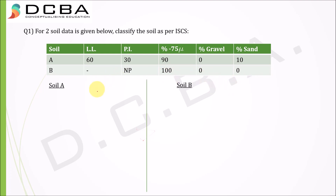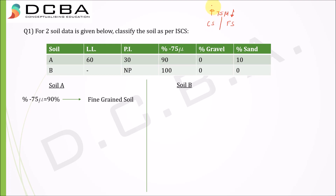For Soil A, since percentage less than 75 microns is 90%, we know that 75 microns is the distinguishing criteria between a fine-grained soil and a coarse-grained soil. If more than 50% is passing through 75 microns it is a fine-grained soil; if more than 50% is retained on 75 microns it is a coarse-grained soil. Since more than 50% is passing through 75 microns, Soil A is a fine-grained soil.